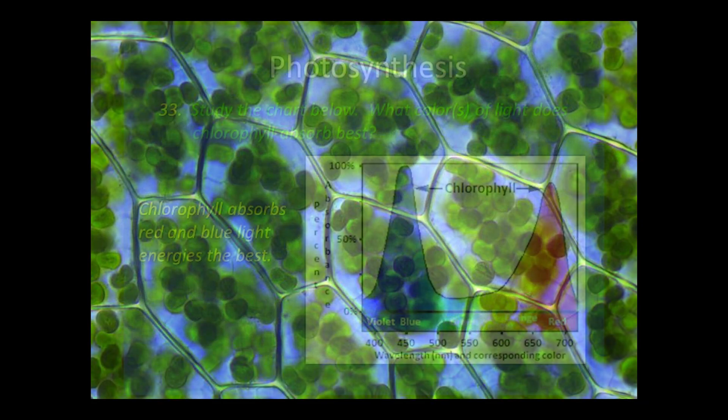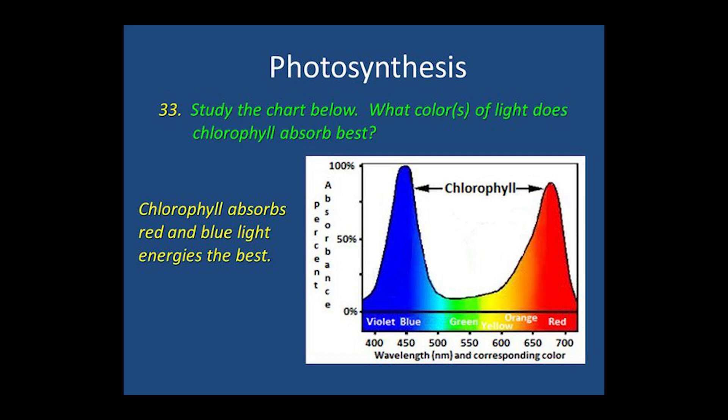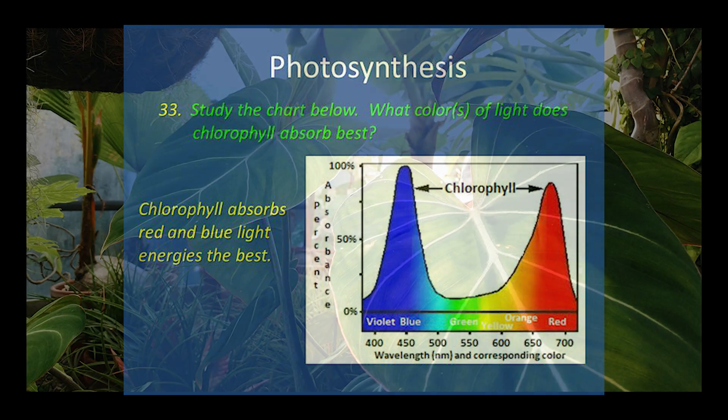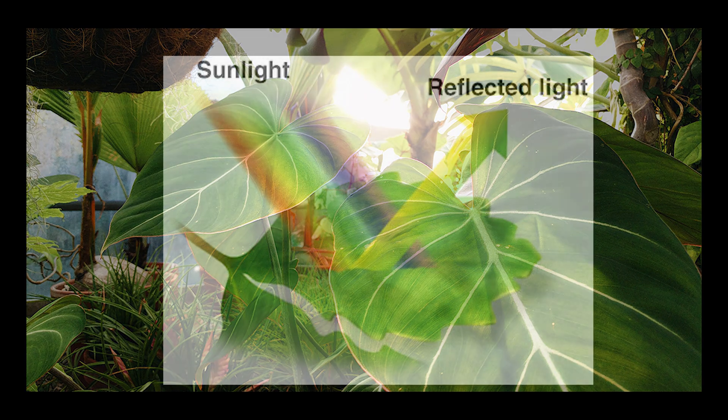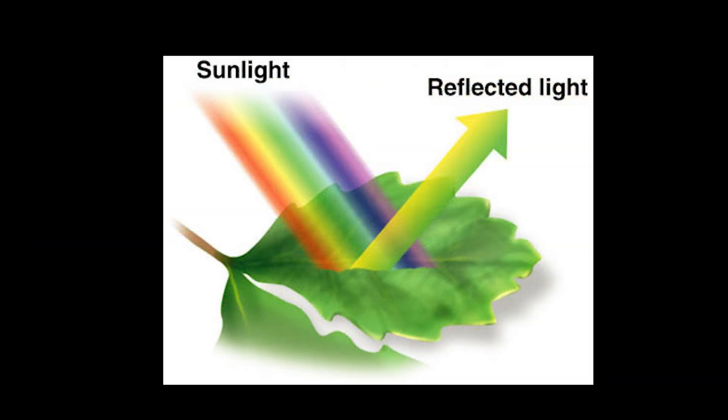Chlorophyll absorbs two light waves the best: blue and red light waves. It actually reflects green light waves — this is why plants are green to us. It's reflecting the green light coming in from whatever the source is instead of absorbing it. So to recap: plants through photosynthesis convert energy from light into glucose and oxygen. They rely on chlorophyll to do this, and chlorophyll absorbs blue light and red light best.